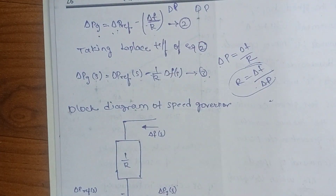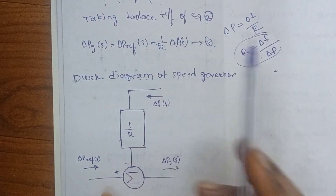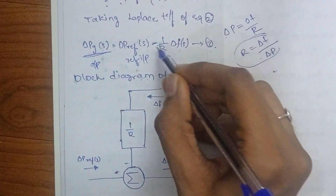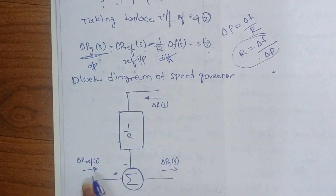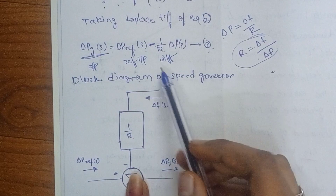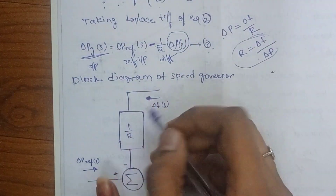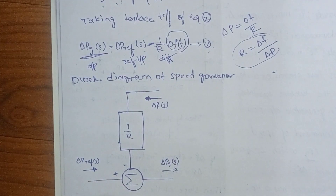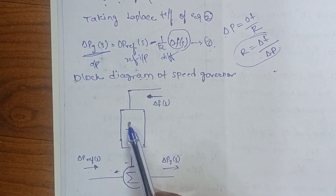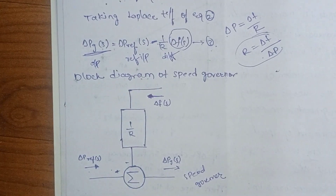We can draw a block diagram for the speed governing system. The output is speed. The input is the reference, delta P reference. We also have minus 1 by R times the change in frequency delta F as the second input. So the speed governing system has two inputs — reference power and change in frequency — and one output representing the speed governor output delta PG.